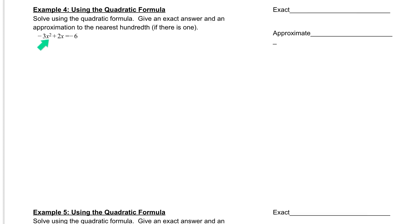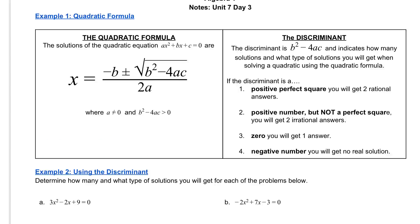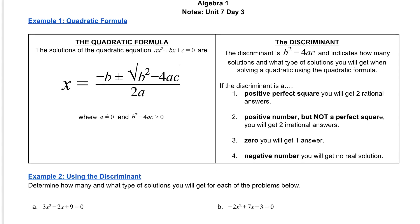As I look at the problem, I have negative 3x squared plus 2x equal to negative 6. The first thing I should be thinking to myself is, is this equal to 0? I'm going to scroll up to the top real quick just to show you the quadratic formula. In the quadratic formula, in order to use it, we have to have ax squared plus bx plus c equal to 0. If it's not set equal to 0, we have to set it equal to 0 before we can get started.